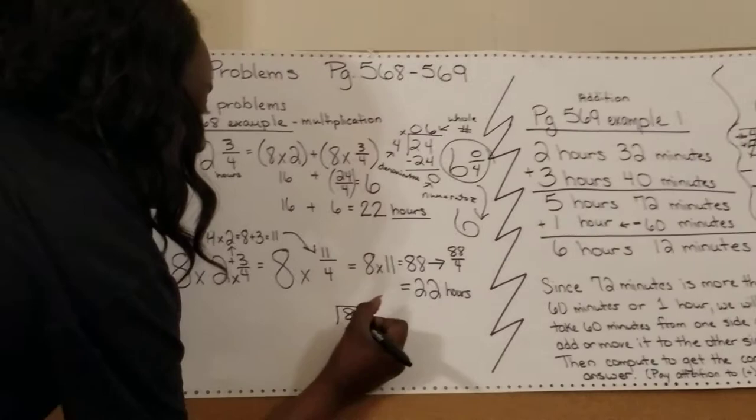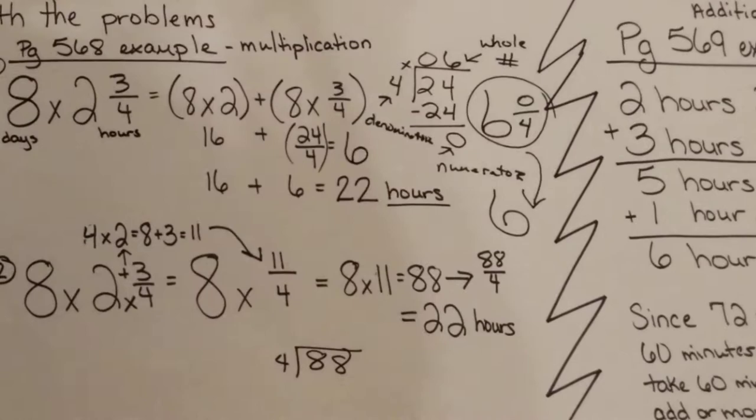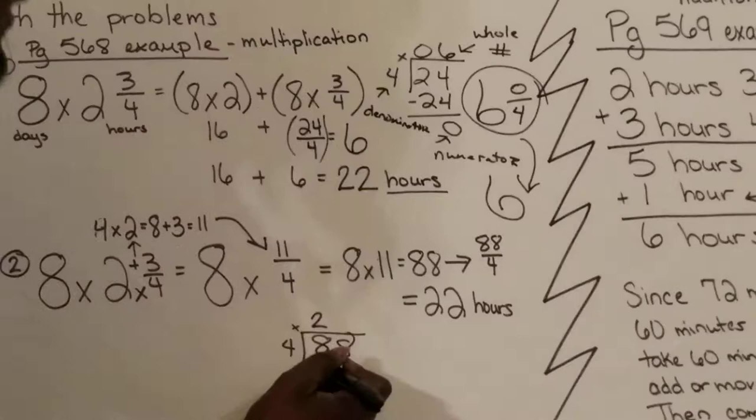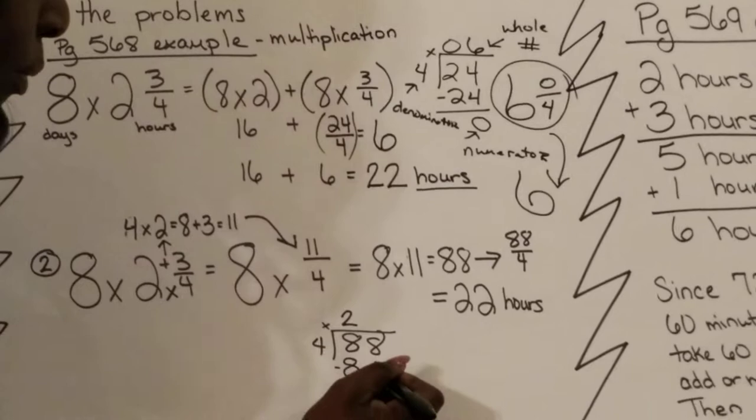I have 88 divided by 4. Remember the steps for dividing: divide, multiply, subtract, bring down. My first step, divide. I can pull 2 groups of 4 out of 8. Multiply, 2 times 4 is 8. Subtract, 8 minus 8 is 0. Bring down your 8.